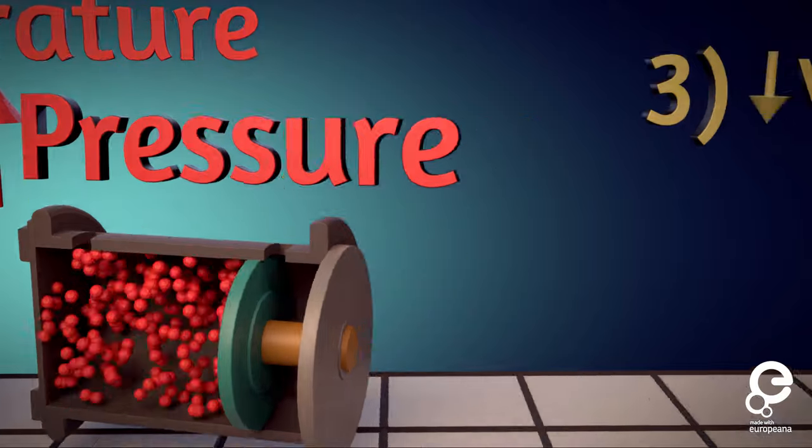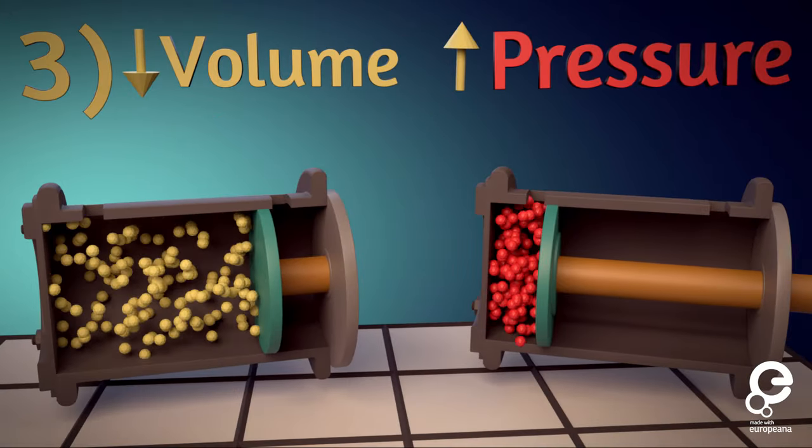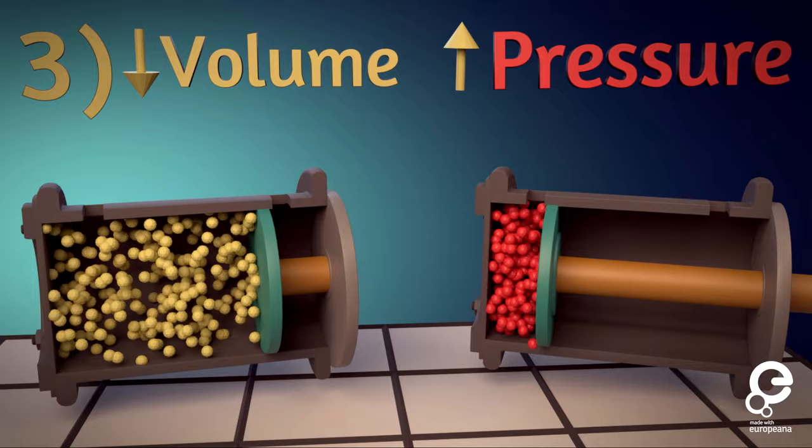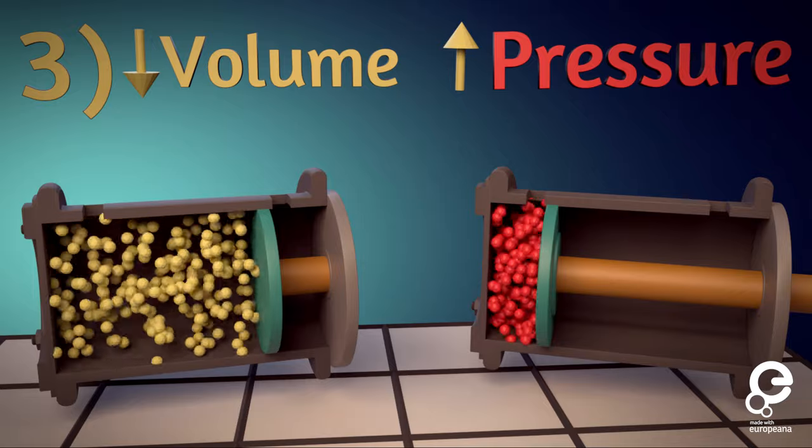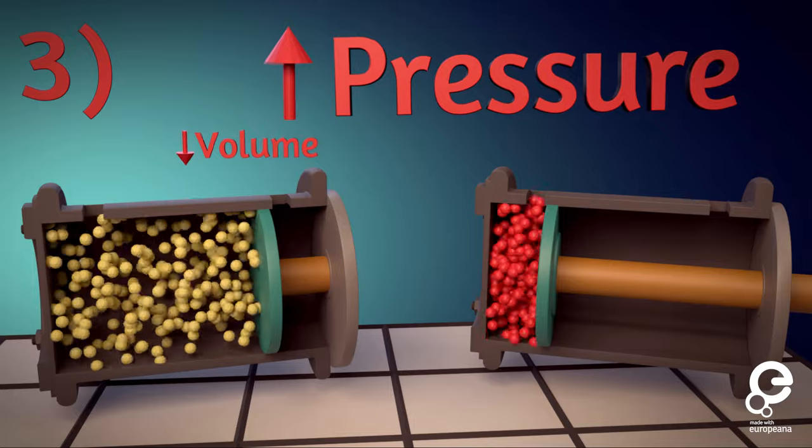Finally, decrease the amount of space. If molecules are closer together, they don't have to travel very far before bouncing into each other, changing direction, and hitting the piston again. The smaller the volume of a container, the more bounces the molecules apply to the walls and piston.